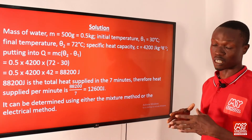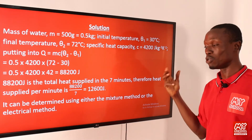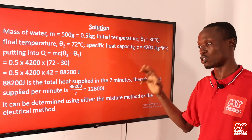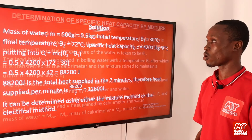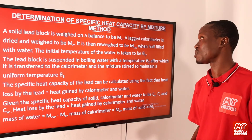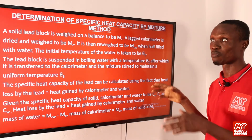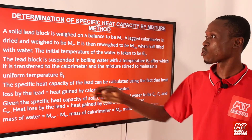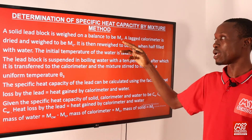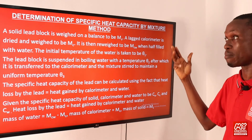The specific heat capacity of a body can be determined using either the mixture method or the electrical method. On the next slide we discuss these methods one after the other. For the mixture method, a solid lead block is weighed on a balance to give mass m_x.